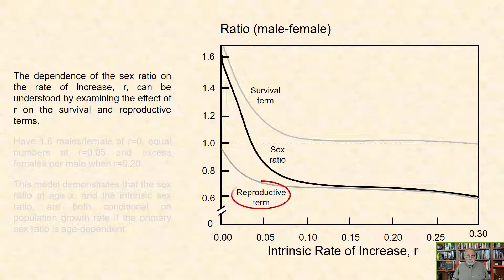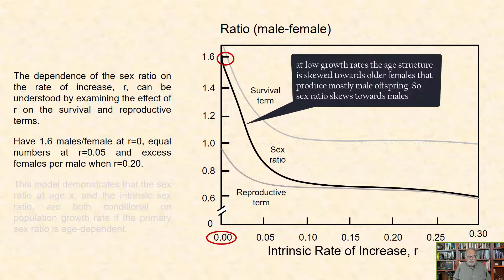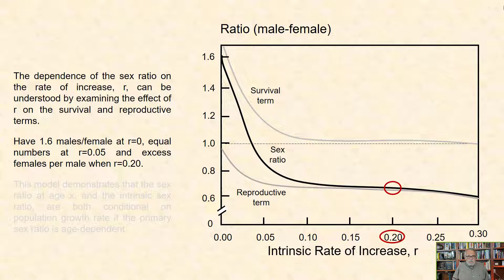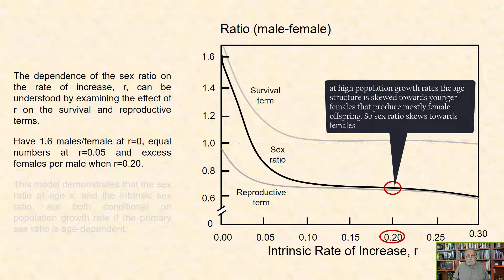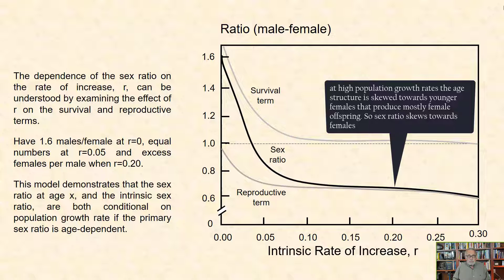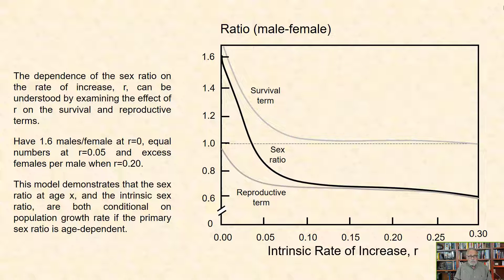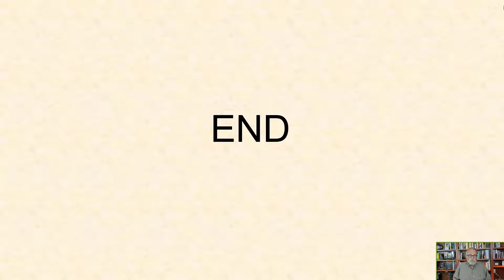For example, there are 1.6 males per female at r equals 0, equal numbers of males and females at r equals 0.05, and an excess females number per male in rapidly growing populations, such as when r equals 0.2. This model demonstrates that the sex ratio at age x and the intrinsic sex ratio are both conditional on population growth rate if the primary sex ratio is age dependent. This ends Module 7.1 of Chapter 7.